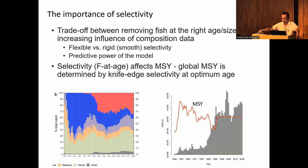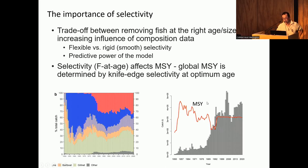Selectivity affects MSY. Most tuna RFMOs use MSY-based reference points one way or another. The pattern of selectivity usually changes with the composition of the catch of different gears. Most tuna RFMOs are looking at dynamic MSY these days, which is kind of good practice. But in this kind of calculation, we normally just look at some reference year to determine the average selectivity and calculate MSY. This doesn't really give you a global MSY. Global MSY can only be determined by using knife-edge selectivity at optimum age. It's an interesting question why no tuna RFMOs are using global MSY as a reference point — something to think about.